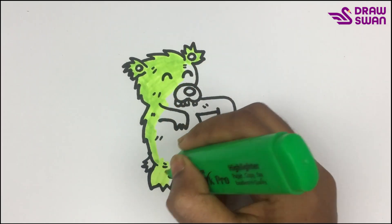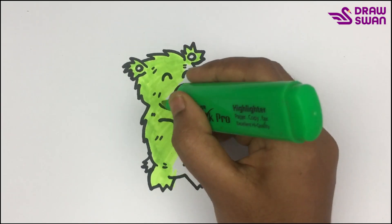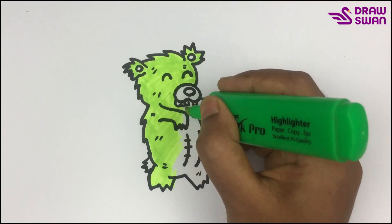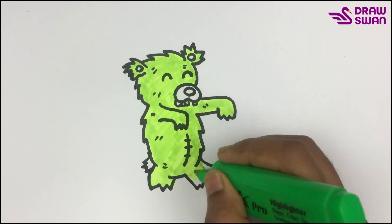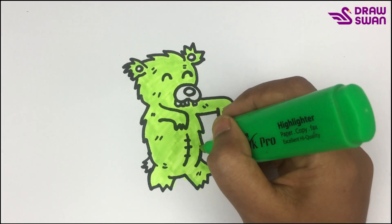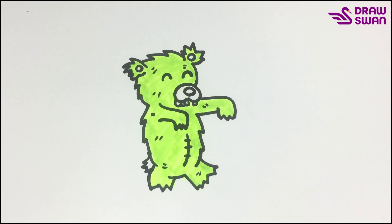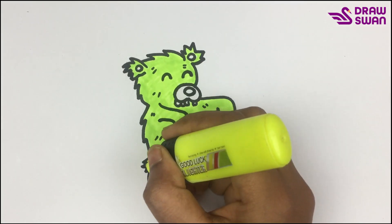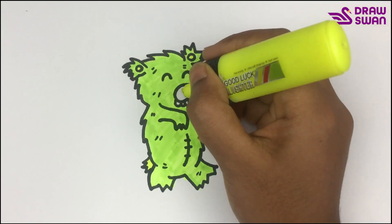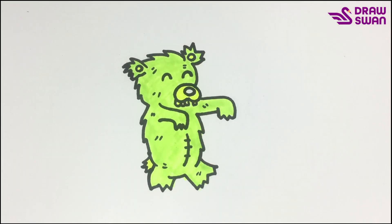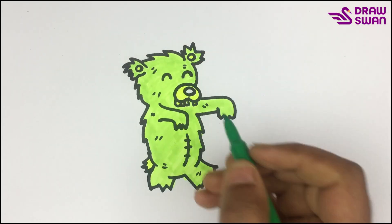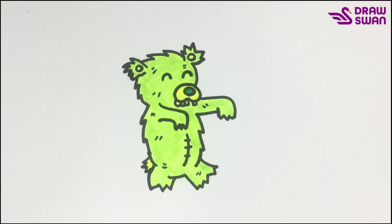I'm using my yellow-green highlighter pen. For its nose, I'm using my green pen. My drawing is done. Thank you so much for watching.